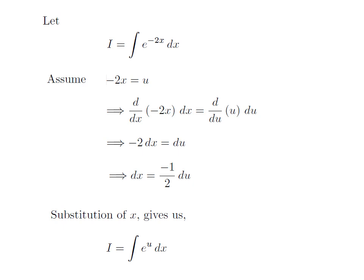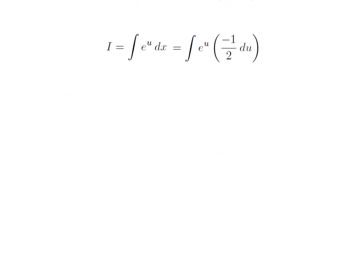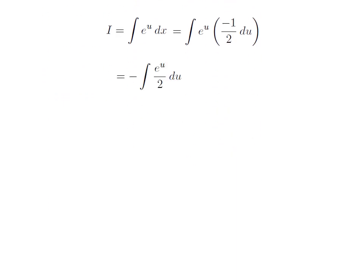I substituted x in integral i by our assumed value. The integration i has become integration of e to the power u into differential of x. I have substituted differential of x by minus 1 upon 2 into differential of u. So i is equal to integration of e to the power u into minus 1 upon 2 into differential of u. Multiplying minus 1 upon 2 with e to the power u, we got i is equal to minus integration of e to the power u divided by 2 with respect to u.